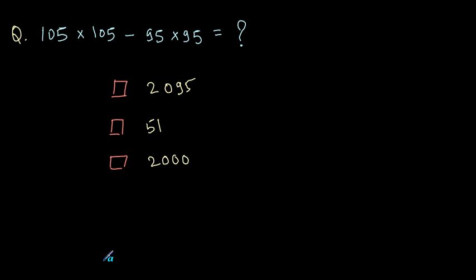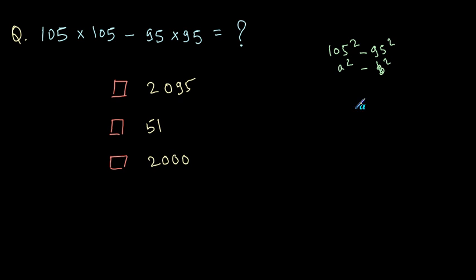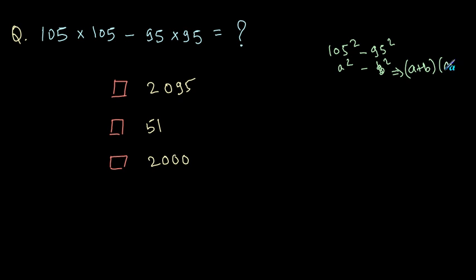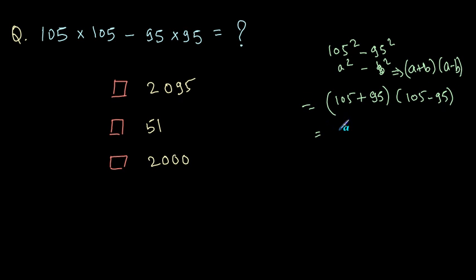Now let's use these formulas. The example is: 105 × 105 minus 95 × 95. Since 105 is multiplied two times, it is 105² minus 95². Putting 105 as a and 95 as b, this becomes a² − b², which by our third formula equals (a + b)(a − b). So it is (105 + 95) × (105 − 95), which is 200 × 10, giving an answer of 2000.